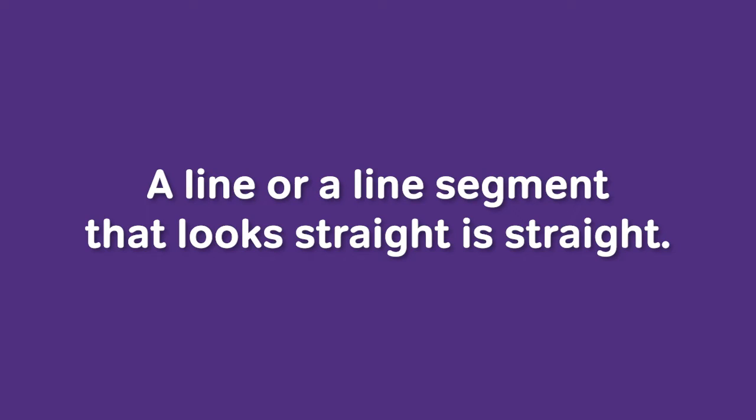Safe assumption number one: a line that appears straight is in fact straight. This is the most fundamental thing you can assume about any geometric diagram, whether it be on a data sufficiency question or a problem solving question type. You can also assume that if points appear to be co-linear — connected by what appears to be a straight line — then the points are in fact co-linear and the line between them is straight. There is no hidden curve, nothing suspicious. That said, it's important not to confuse straight with horizontal. A straight line can be straight in any direction; you cannot assume a line is horizontal just because you can assume it's straight.